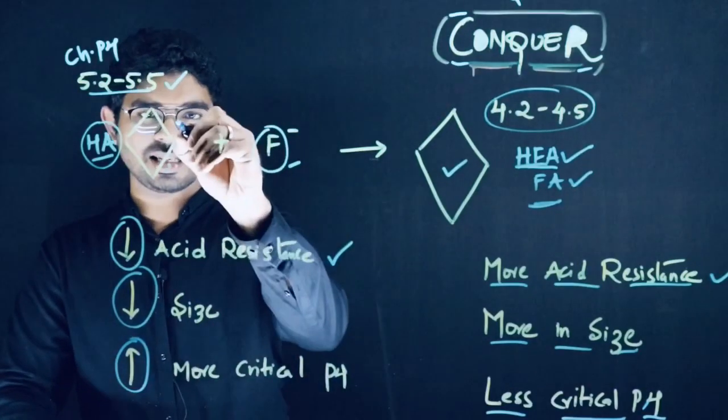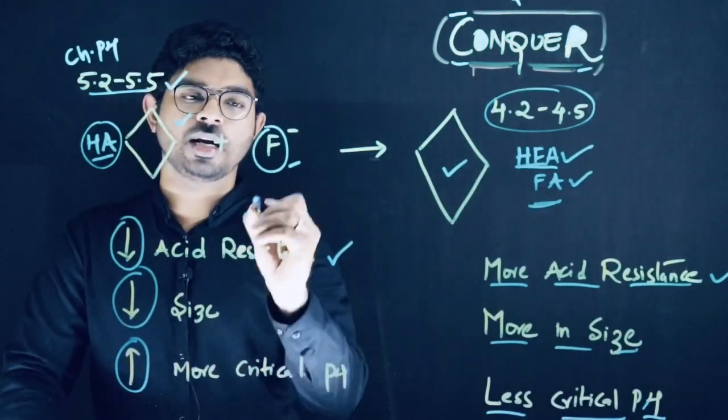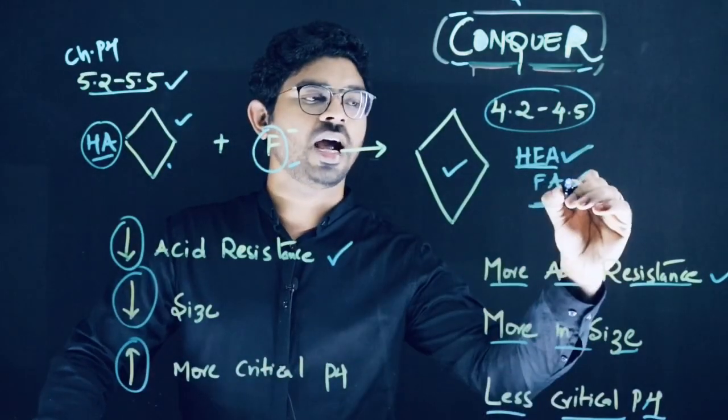Most dental structures contain a molecule called hydroxyapatite. When hydroxyapatite reacts with fluoride, it forms two molecules: fluorohydroxyapatite and fluorapatite.